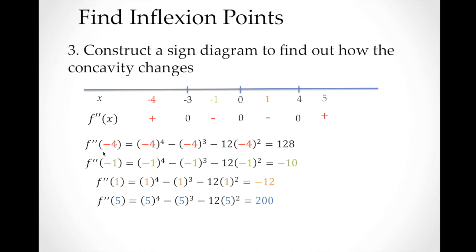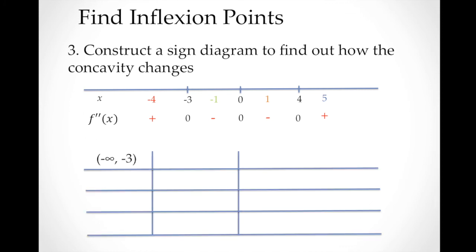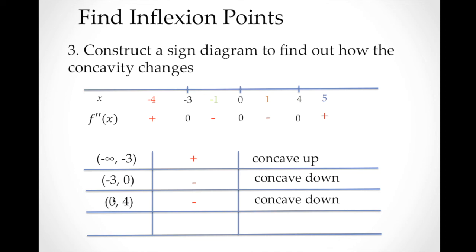Let's summarize the concavity from the sign diagram. On (−∞, −3): second derivative is positive, so the graph is concave up. On (−3, 0): second derivative is negative, so the graph is concave down. On (0, 4): second derivative is negative, so the graph is concave down. On (4, +∞): second derivative is positive, so the graph is concave up.